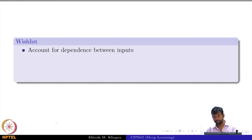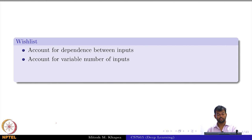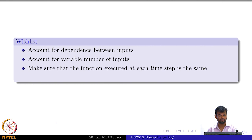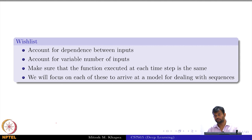Here is the wish list that we have. Whatever model we come up with should account for the dependence between inputs, because the output actually depends on multiple inputs and not just a single input. It should also account for a variable number of inputs — a video could be 300 seconds or 20 seconds, a sentence could be of arbitrary length. And it should ensure that the function at each time step is the same, because at every time step we are trying to do the same activity.